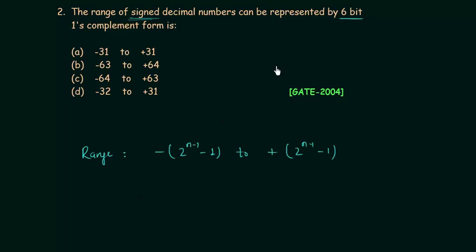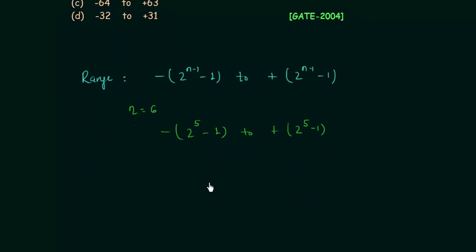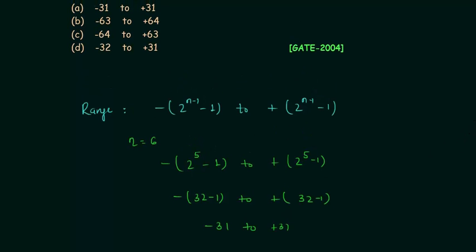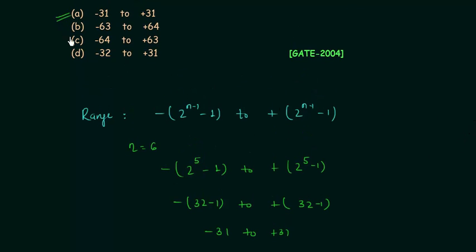We have 6 bits, so n equals 6. Substituting, we get minus 2 raised to power 5 minus 1, to plus 2 raised to power 5 minus 1. Since 2 raised to power 5 is 32, this gives us minus 32 minus 1 to plus 32 minus 1, which is minus 31 to plus 31. Option A is the correct answer.